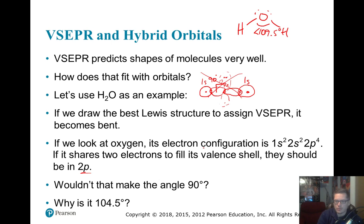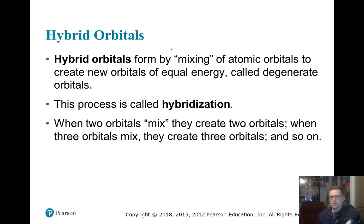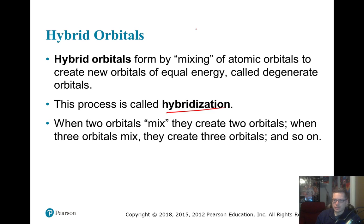Hybrid orbitals are formed by mixing atomic orbitals to create new orbitals of equal energy called degenerate orbitals. This process is called hybridization. Essentially you're mixing orbitals in order to create a new type of orbital that can be used for bonding.